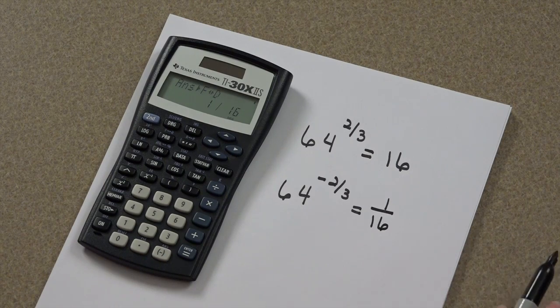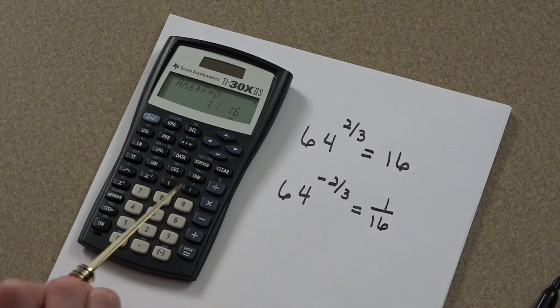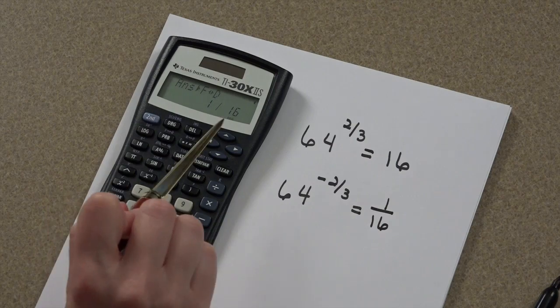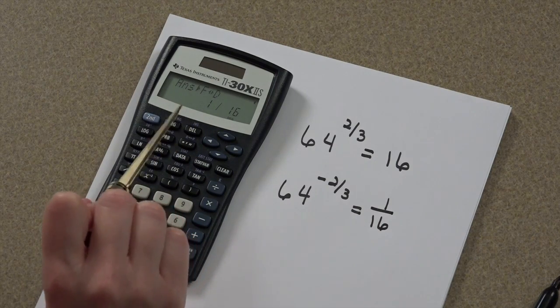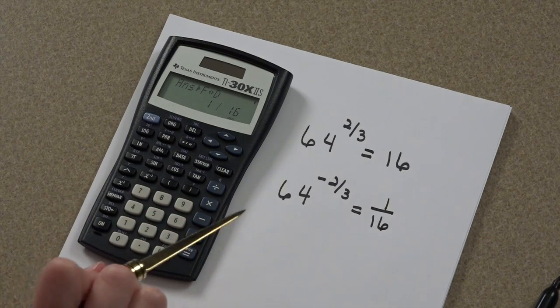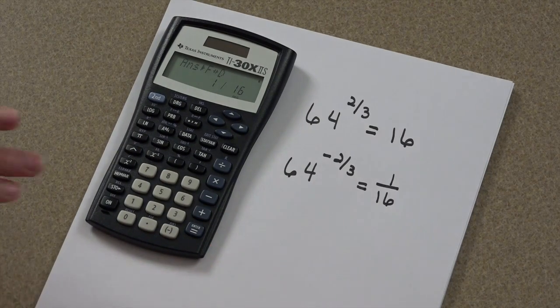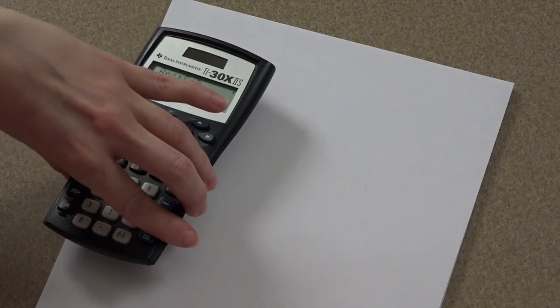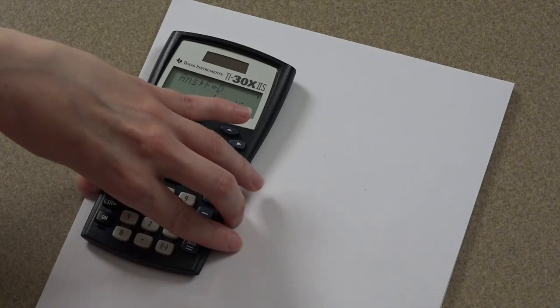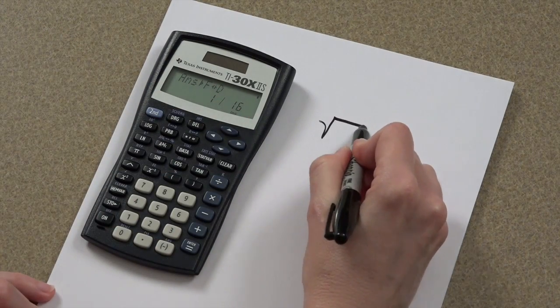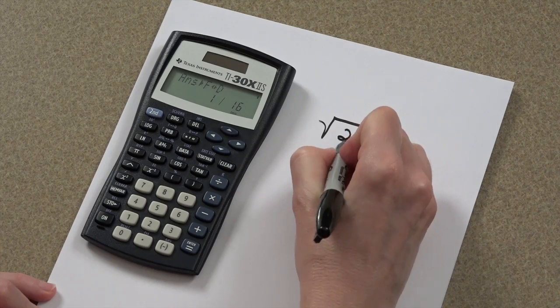Pretty awesome. Now, I do want to warn you, not all decimals flip over to fractions, so be aware of that. You can find roots of numbers. You can find the square root of 25.